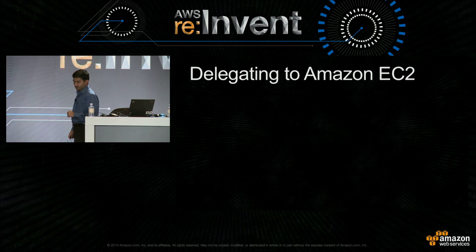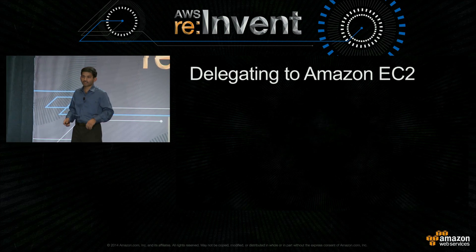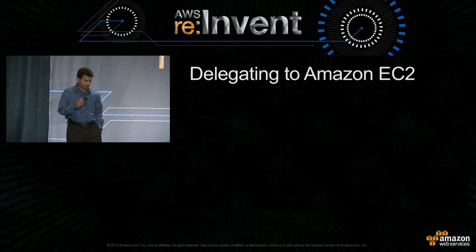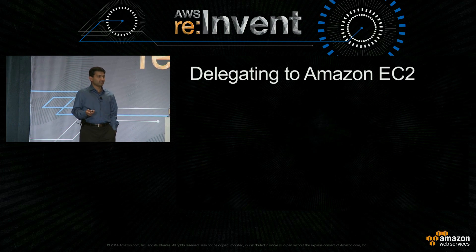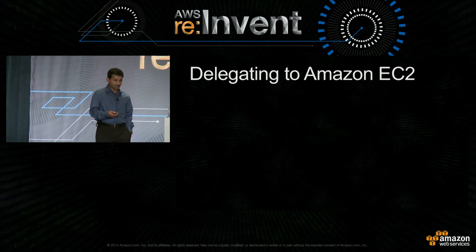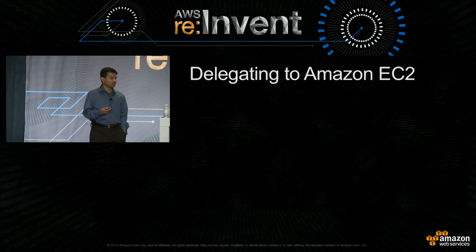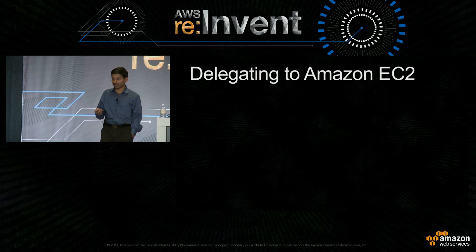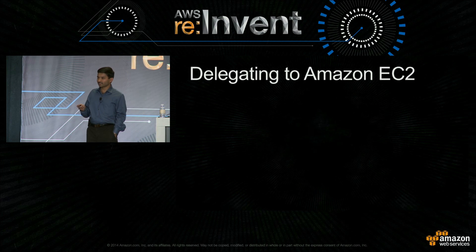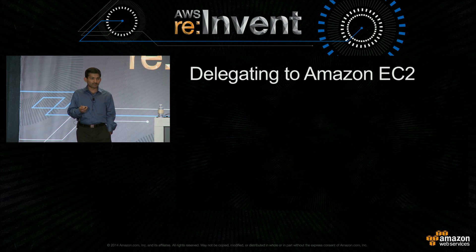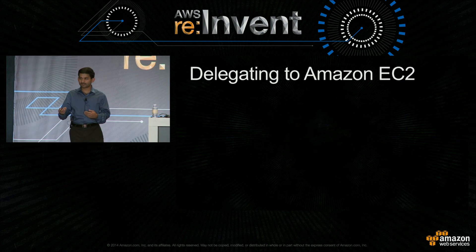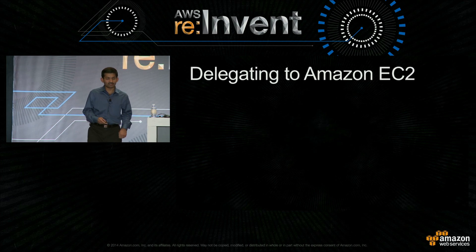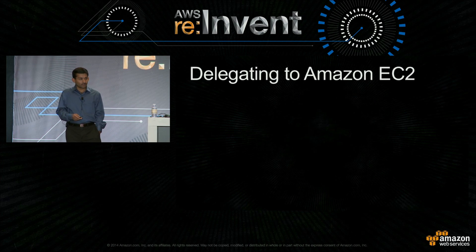Delegating access to Amazon EC2 — this is the second use case in the third scenario. Many customers have applications that run on EC2 instances. Now if this application itself wants access to AWS, it is going to need credentials. It's a very interesting problem: how do you get this credential to the instance? Instances can come and go — that's the whole idea of cloud: elasticity and flexibility.